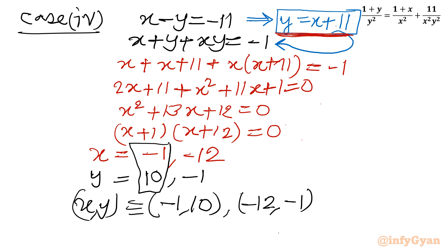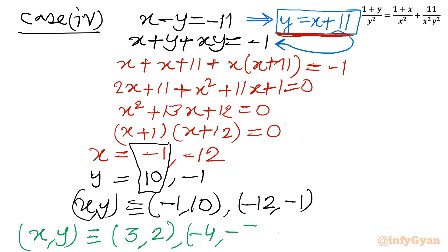So the overall complete solution set of this Diophantine equation is: (x, y) equals (3, 2), (−4, −5), (−1, 10), and (−12, −1).